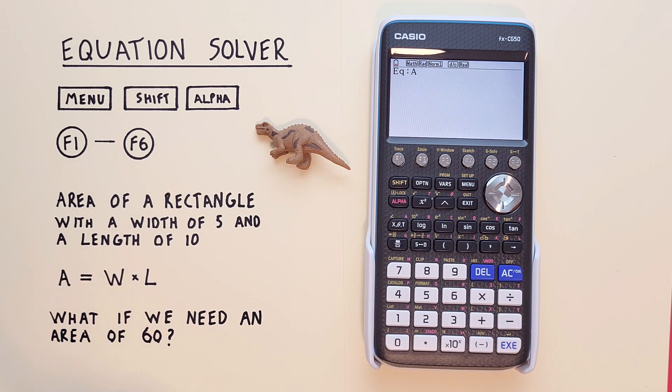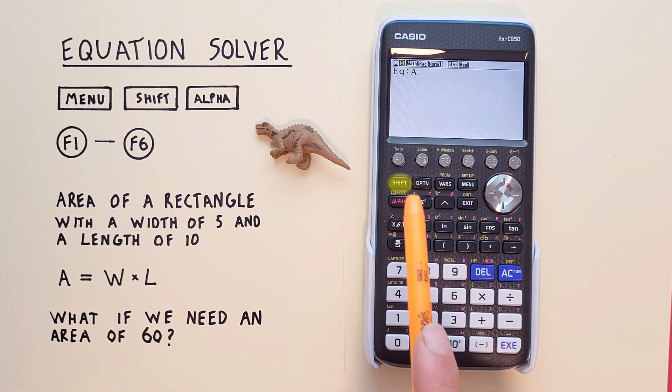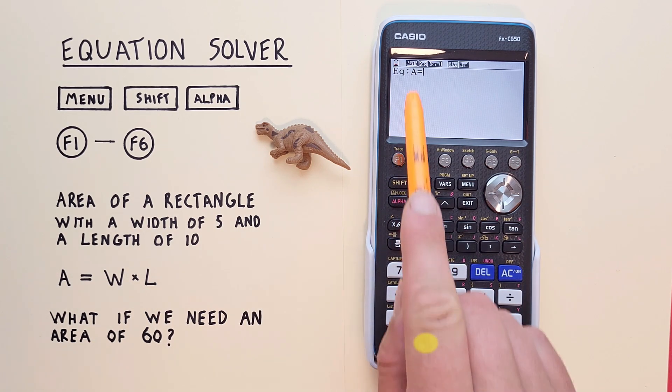And then the equals. For the equals, we go shift and then the decimal key. There we go.